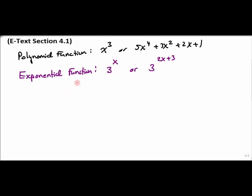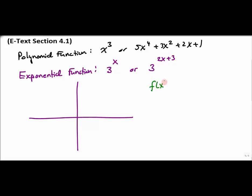Let's talk about the graph of an exponential function. It can be one of two things depending on whether the exponent is a positive or negative value. For this example, let's use f(x) = 3^x. I'm going to choose a few values to plot for x — negative 3, negative 2, negative 1, 0, 1, 2, 3 — and see what our output is for f(x).